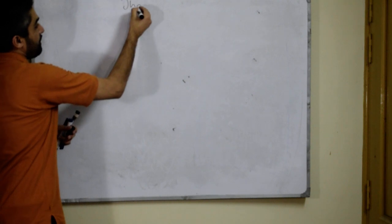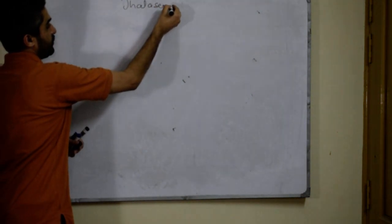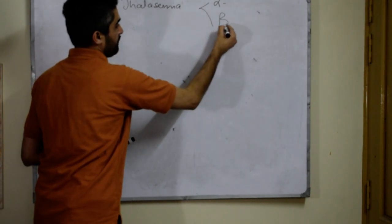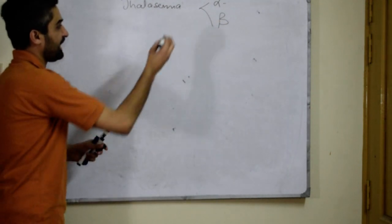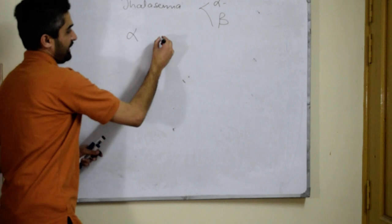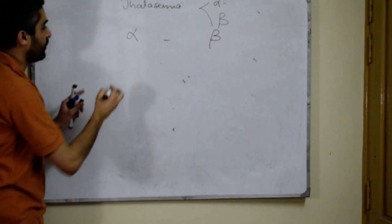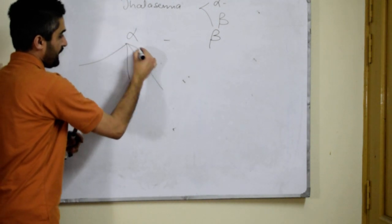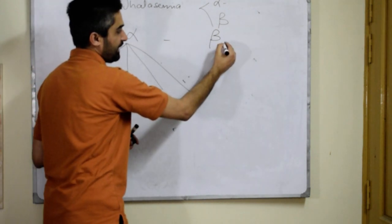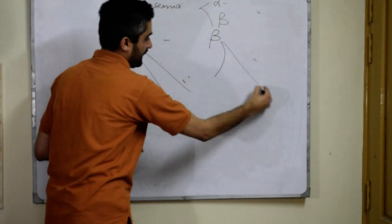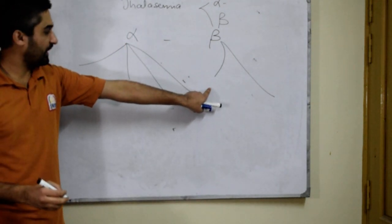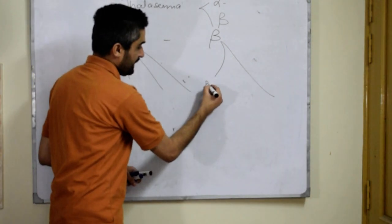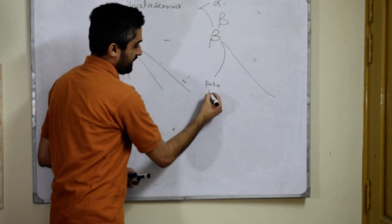Thalassemia has two types: number one, alpha thalassemia, and number two, beta thalassemia. Alpha thalassemia involves 4 genes, and beta thalassemia involves 2 genes. If one gene is defective in beta thalassemia, it is called beta thalassemia minor.